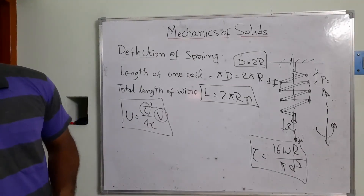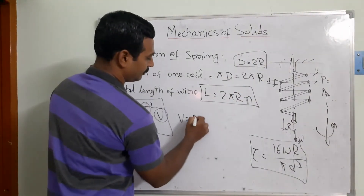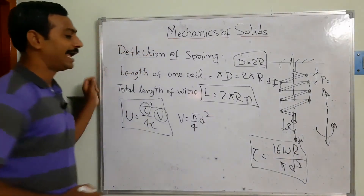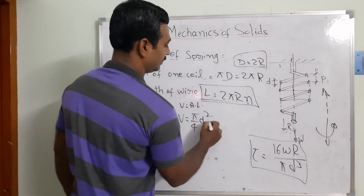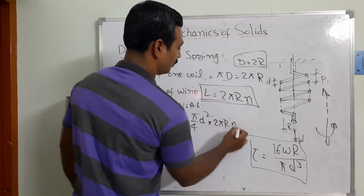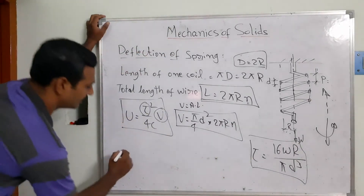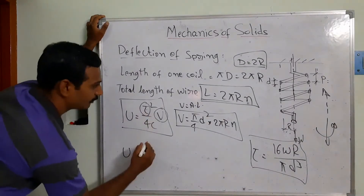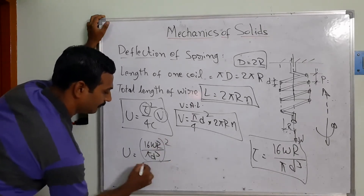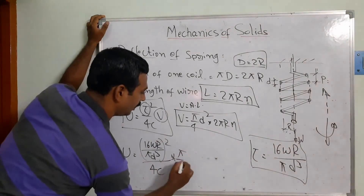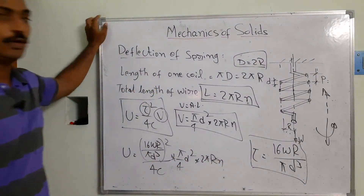Now substituting the values of τ and volume: τ = 16WR / (πd³), and volume = (π/4)d² × 2πRn. Substituting into the strain energy equation: U = [16WR / (πd³)]² / (4C) × (π/4)d² × 2πRn.